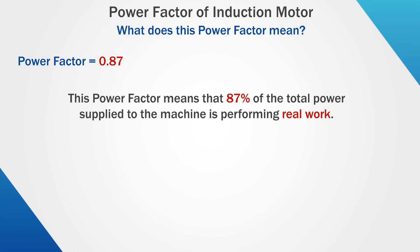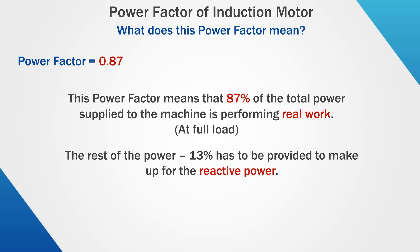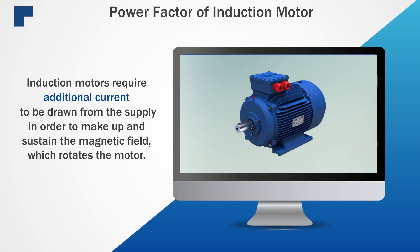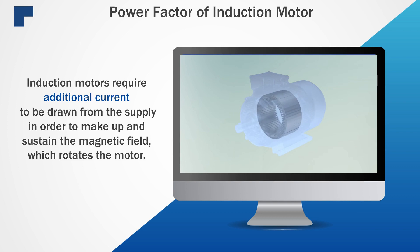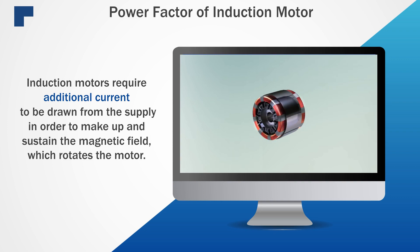This power factor means that 87% of the total power supplied to the machine is performing real work. The rest of the power, 13% to be exact, has to be provided to make up for the reactive power. Reactive power causes additional reactive current to flow across the installation. Like any other AC machine, an induction motor requires that additional current to be drawn from the supply in order to make up and sustain the magnetic field which rotates the motor.